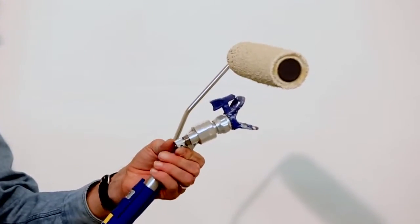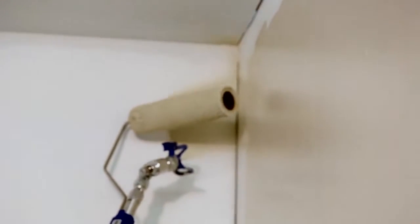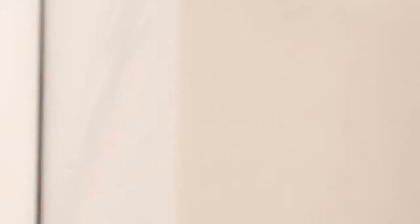To avoid spraying the roller, angle the spray head away from the roller, spray the corner, readjust the spray head, and continue jet rolling.